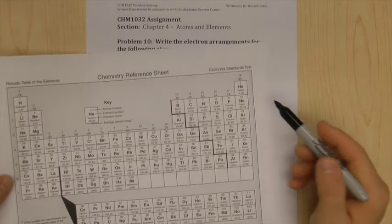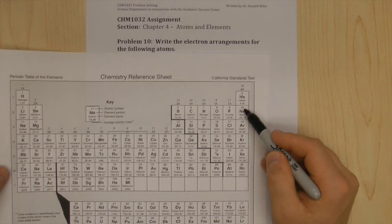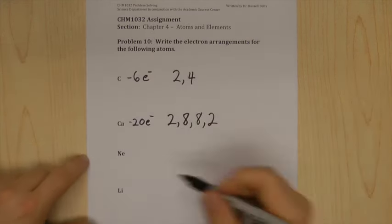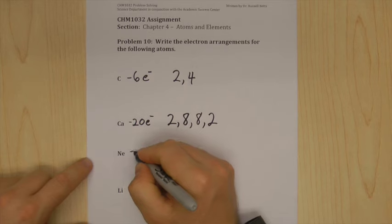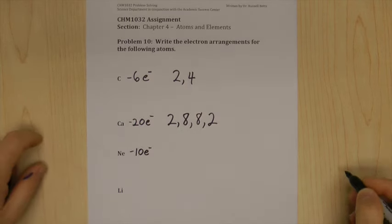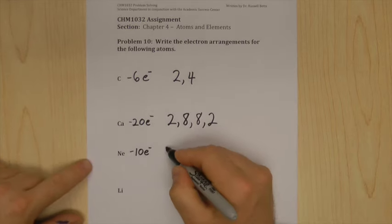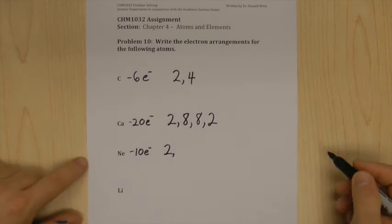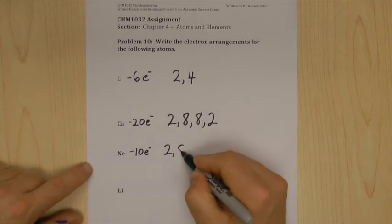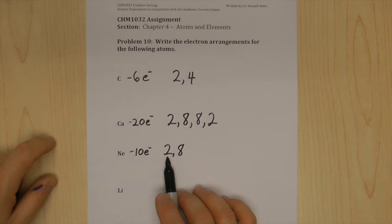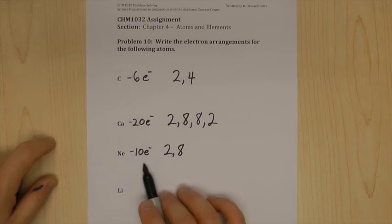Next, neon. Going back to the periodic table, neon has 10 protons, so it also has 10 electrons. We fill in the energy levels: 2 in the first energy level, and 8 in the second energy level, for a grand total of 10. Neon's electron arrangement is 2,8.